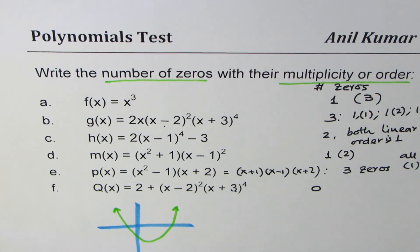That is how you can actually find the number of zeros and their multiplicity from the given equation. It really helps to sketch functions once you understand zeros and their multiplicity. I'm Anil Kumar and I hope that helps. Thank you and all the best.